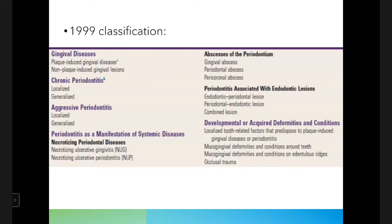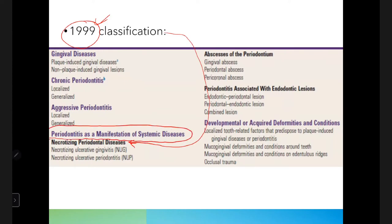Regarding classification systems: in the 1999 classification, necrotizing periodontal diseases fall under 'periodontitis as a manifestation of systemic diseases,' which includes categories like gingival diseases, chronic periodontitis, aggressive periodontitis, and periodontitis as a manifestation of systemic diseases. Under that last category, NPD is divided into necrotizing ulcerative gingivitis and necrotizing ulcerative periodontitis.